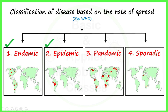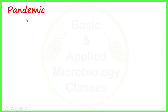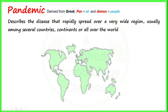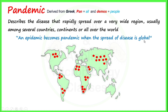Now we are moving towards our third type, pandemic. Again, it has been derived from Greek where 'pan' stands for 'all' and 'demic' has been taken from 'demos' meaning 'people'. So the meaning of pandemic is 'all people'. This term pandemic is used to describe a disease that rapidly spreads over a wide region, usually among several countries, continents, or all over the world. Pandemic starts from the epidemic — that is, a sudden increase in cases in a specific area — and when epidemic spreads globally, we say it has become a pandemic. So in a pandemic there is a global spread of a particular disease.